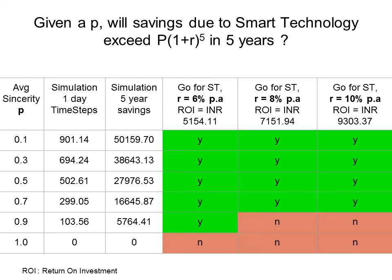Here is the comparison of savings obtained due to smart technology deployment versus those obtained after investing the money elsewhere for 5 years at a certain rate of interest. Green cells denote that we should go for smart technology deployment because the energy saved exceeds the returns obtained after investing the money elsewhere.